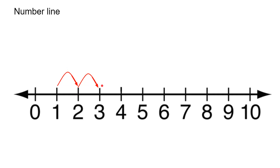So this jumping is also called skipping numbers. It is called skipping numbers. So the frog is skipping numbers by one. By skipping one number, it reached two. Then again by skipping one number, it reached three. Now guess — by one more skip, where will it reach? It is at three right now, so it will reach four. One jump and four.